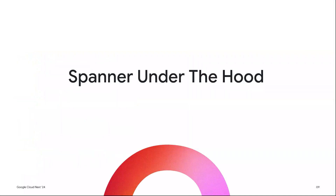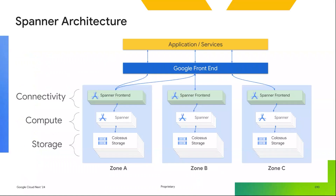Let's spend a little time discussing how Spanner achieves these properties. Here we see a typical Spanner deployment — a regional instance configuration containing services in three zones. Each zone represents a replica of a Spanner deployment. Under the hood, Paxos is used to maintain consensus among the zones and ensures Spanner is resilient to zonal outages.